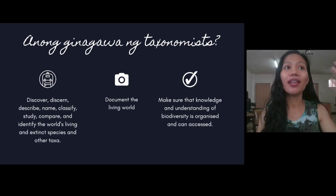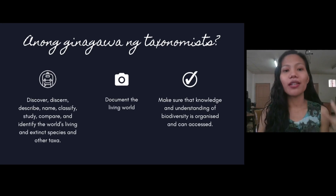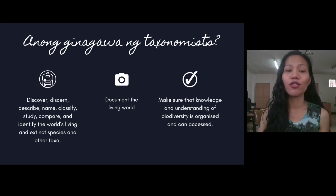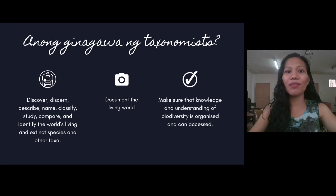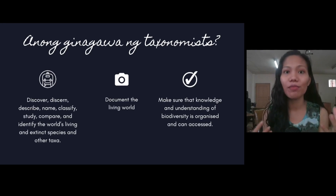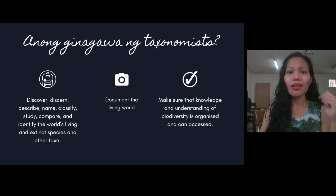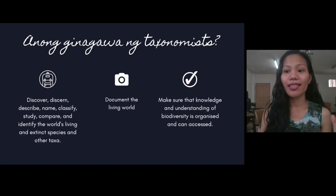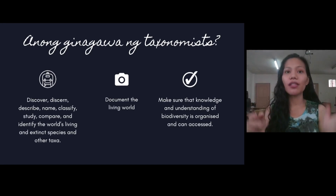The third icon is a checkmark, because taxonomists have to make sure that knowledge and understanding of biodiversity is organized and can be accessed. Accessible repositories containing data that can be easily understood are essential. Good communication ensures that science lives on — information is passed from generation to generation. Documentation also provides a means for counter-checking and verifying the data we collect.